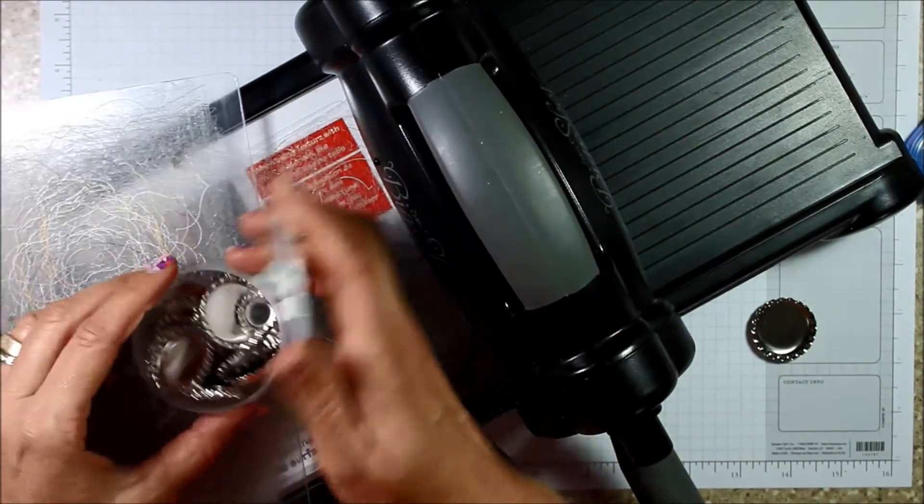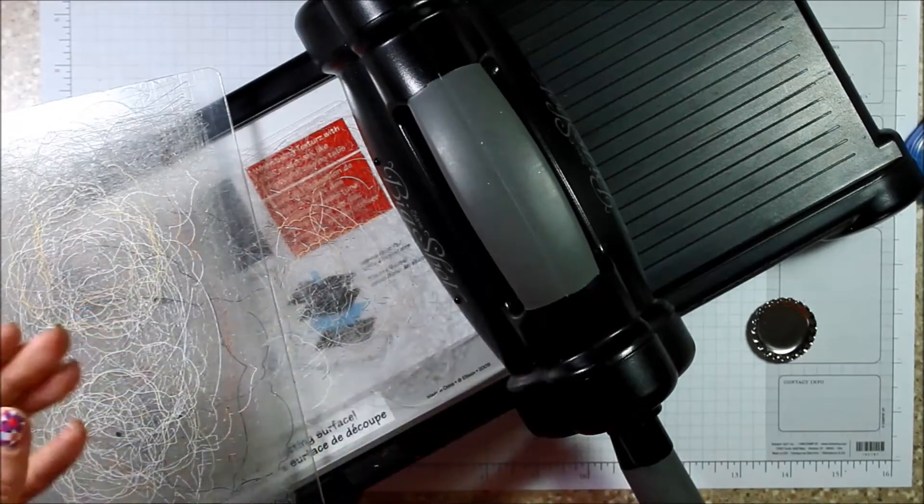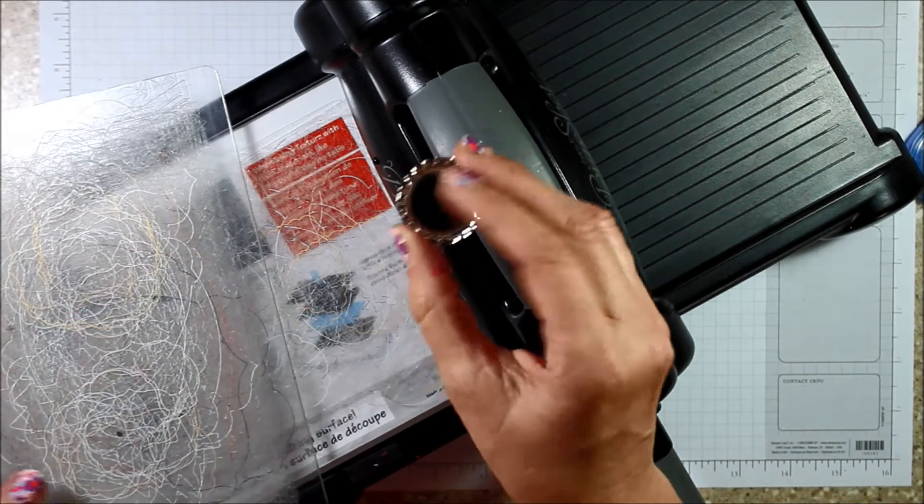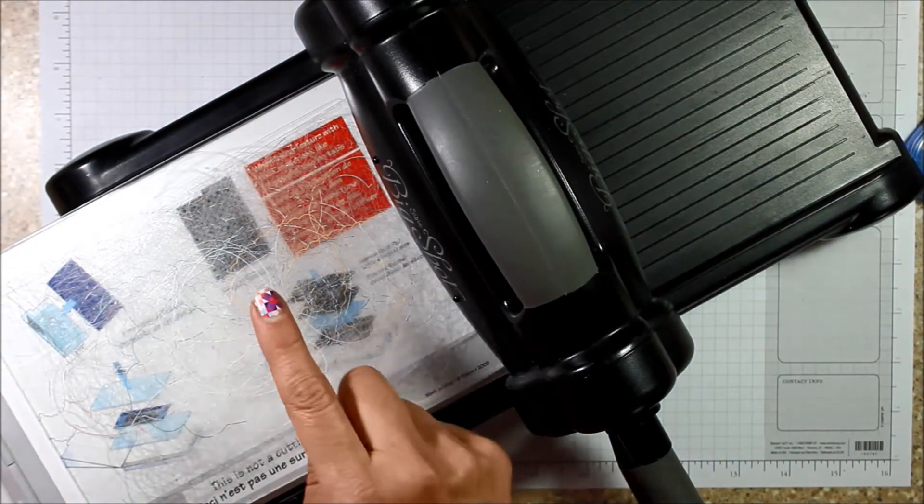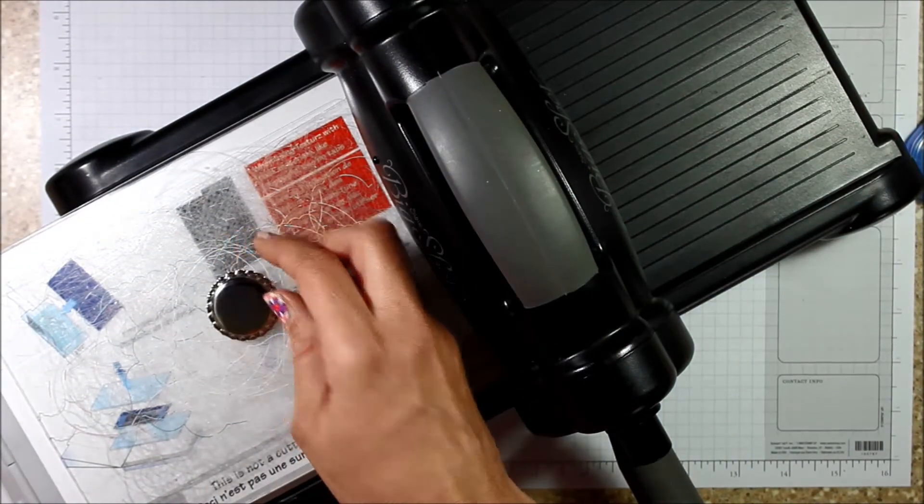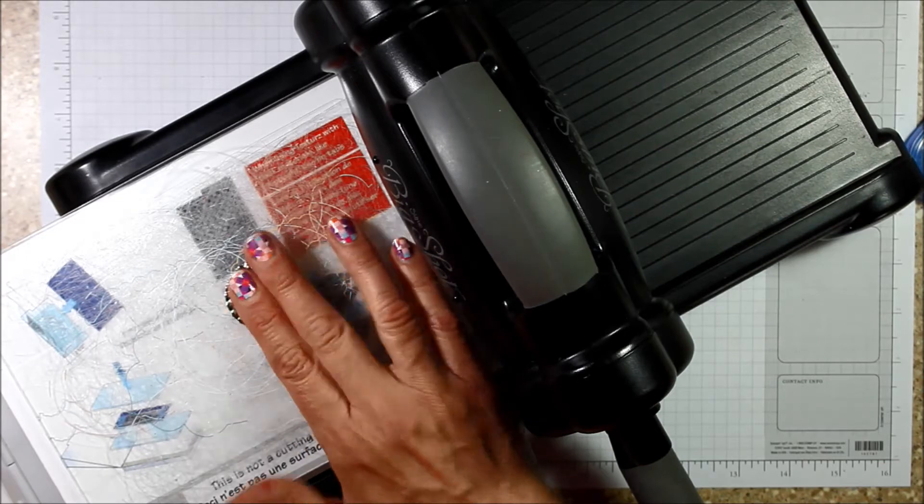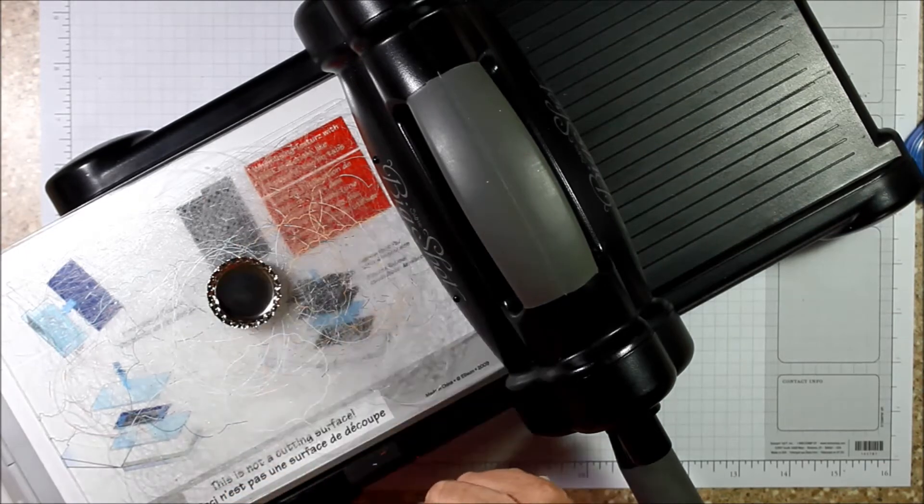You can smash big and little ones through the Big Shot. But we're going to do the big one. So I have my soda pop top and my Big Shot. I'm using the platform with no tabs and then my two cutting plates. Now if you want to run it through face down or I call that belly up, you can do it either way.